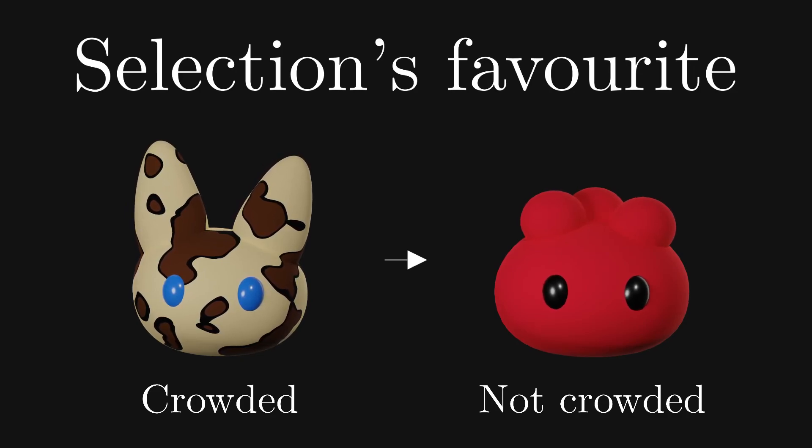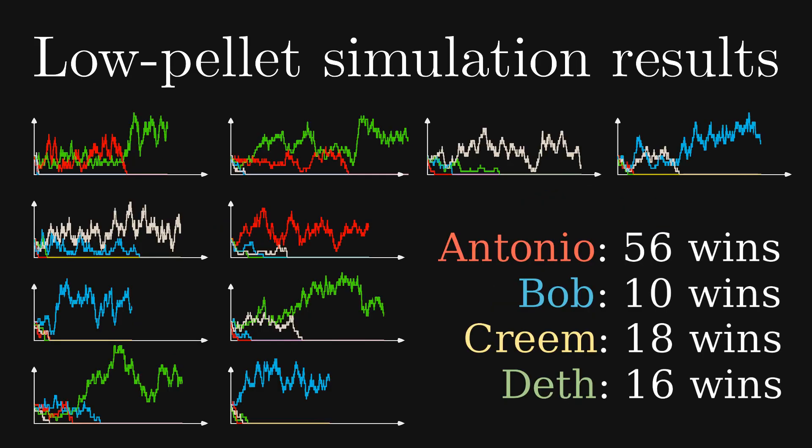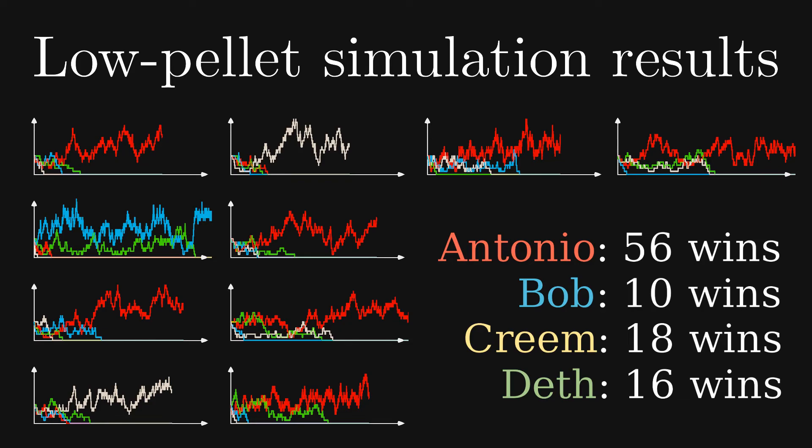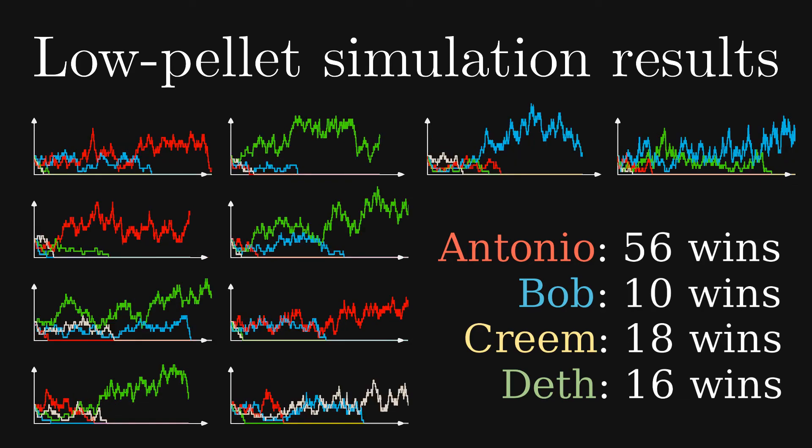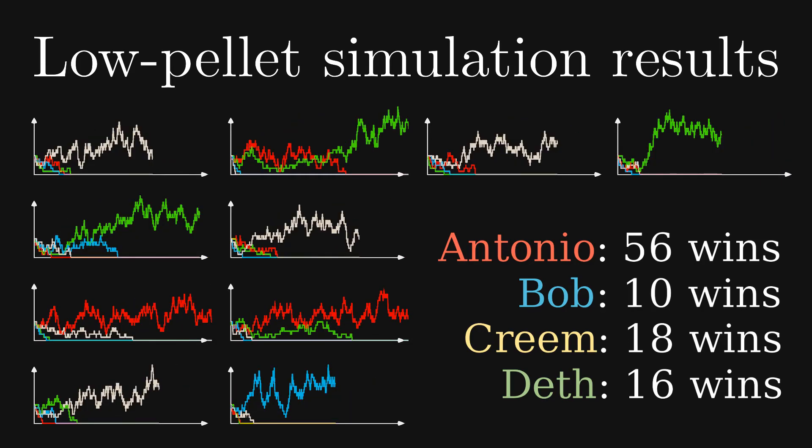However, we also made chance play a much bigger role. Because the population is now smaller, just one individual dying at an unfortunate time, or failing to find enough magic pellets, will have a much bigger effect on the final outcome.